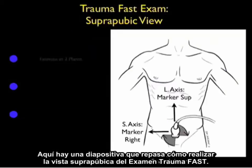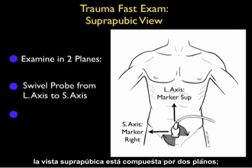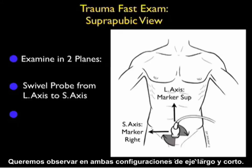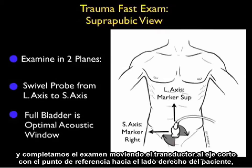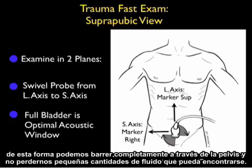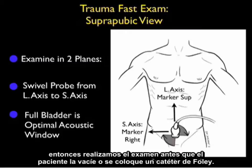Here's a slide reviewing how to perform the suprapubic view of the trauma FAST exam. In contrast to the upper quadrant views, where we looked only in a long axis configuration, the suprapubic view is made up of two planes — we want to look in both long and short axis configurations. We'll begin in long axis with the marker dot oriented towards the patient's head and complete our exam by moving the probe into short axis with the marker dot towards the patient's right side. This way we can fully scan through the pelvis and not miss any small amounts of fluid. It's optimal to perform the examination with a full bladder as an optimal acoustic window, so perform the exam prior to having the patient void or placing a Foley catheter.